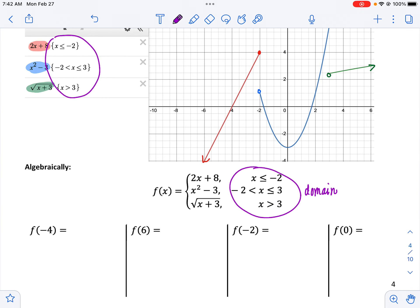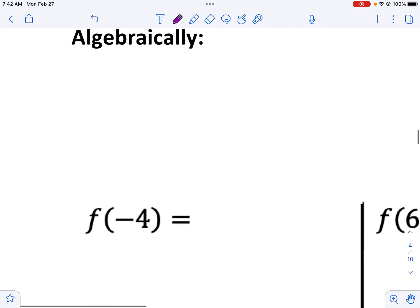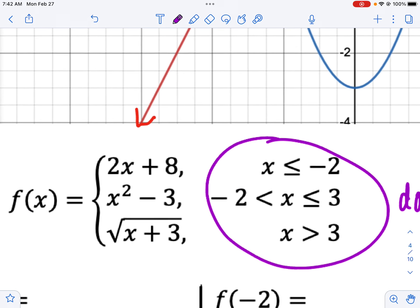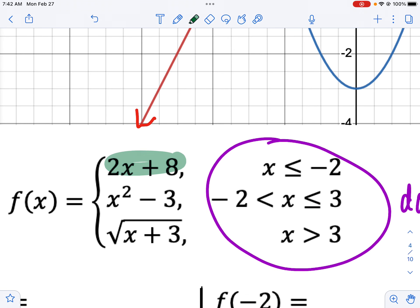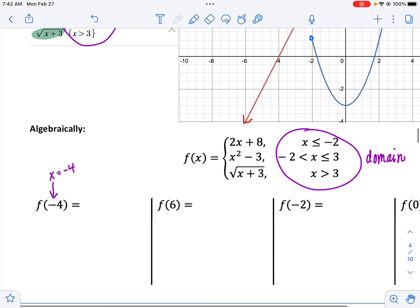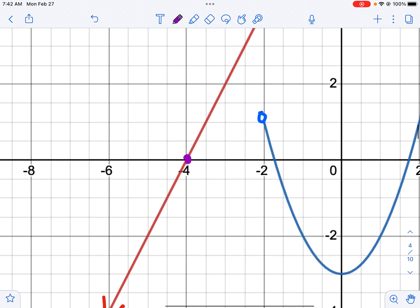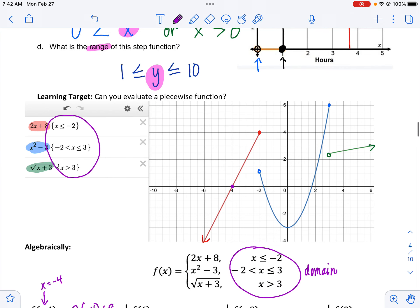Algebraically, can you just evaluate the function with the given information. So this is saying when x is negative 4, what's the output f of negative 4? When x is negative 4, which is less than negative 2, we're going to use this function right here. So 2x plus 8. So 2 times and we'll plug in negative 4 for x plus 8. And that would be negative 8 plus 8 which is 0. So we say f of negative 4 equals 0. That's how we evaluate it just by plugging in. We could have also looked at the graph when f is negative 4. You can see on the graph that the y value is 0.